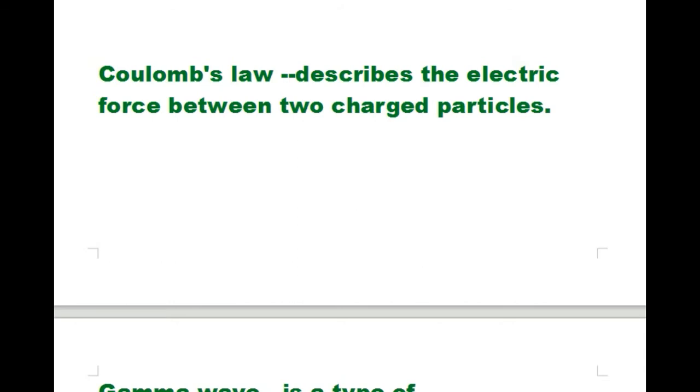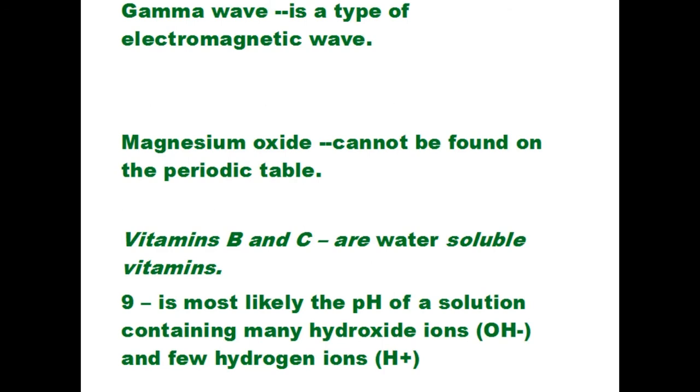Coulomb's law describes the electric force between two charged particles. Gamma wave is a type of electromagnetic wave. Magnesium oxide cannot be found on the periodic table. Vitamins B and C are water-soluble vitamins.